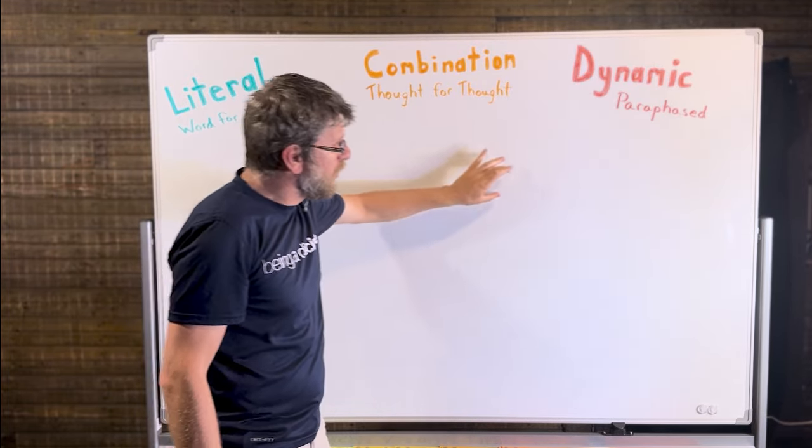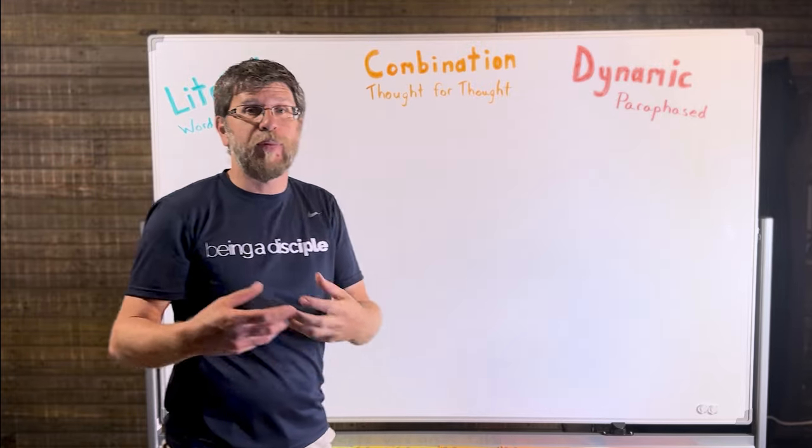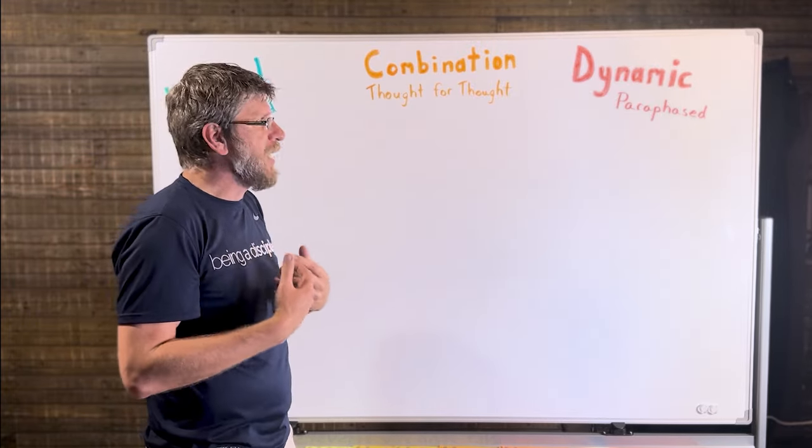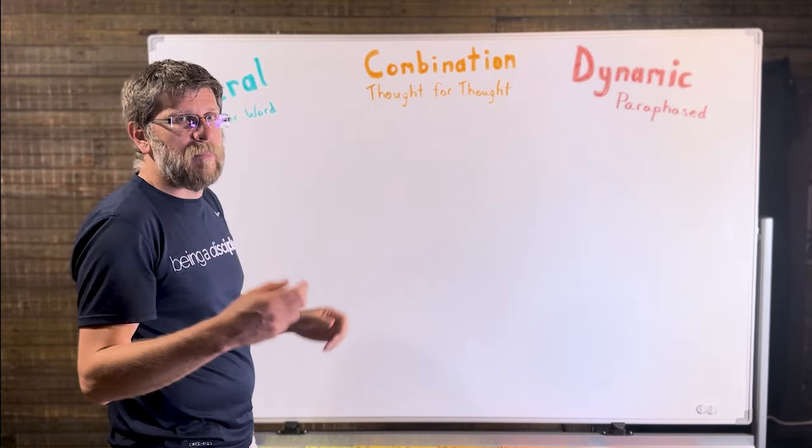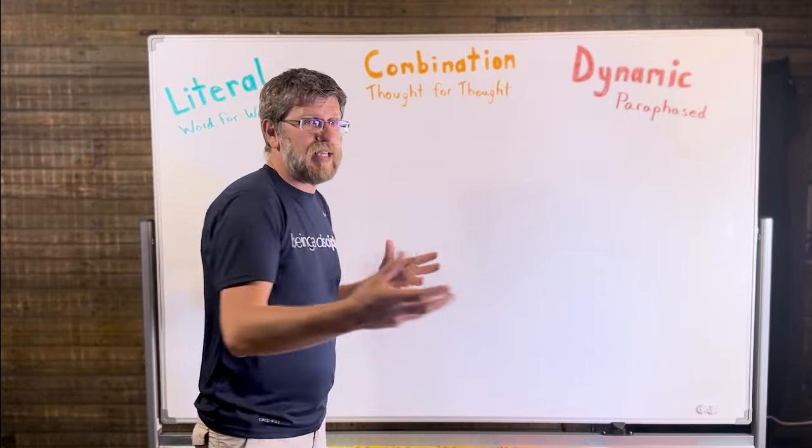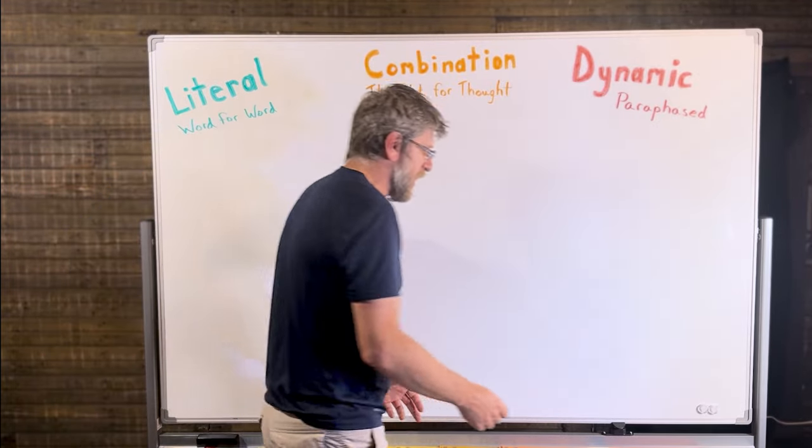Clear on the other side of the spectrum, you have dynamic equivalency. That is paraphrasing. It takes the original sentence out of the manuscripts and then translates it into a modern paraphrased version, trying to match it better to how we can understand modern English versus how the ancient manuscripts may have tried to translate or transfer that thought when they were writing it down directly from God.